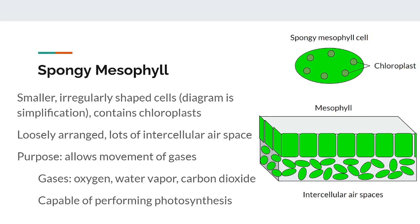The spongy mesophyll is made of smaller, irregularly shaped cells that are more loosely arranged than the palisade cells, leaving more intercellular air spaces between them. The spongy mesophyll cells are still capable of performing photosynthesis, but are much less likely to than the palisade cells. Since sunlight comes from above and the palisade mesophyll is located above the spongy mesophyll, most of the sunlight is absorbed in the palisade mesophyll. The main purpose of the spongy mesophyll is to allow the movement and exchange of gases — oxygen, carbon dioxide, and water vapor — using its large intercellular air spaces.